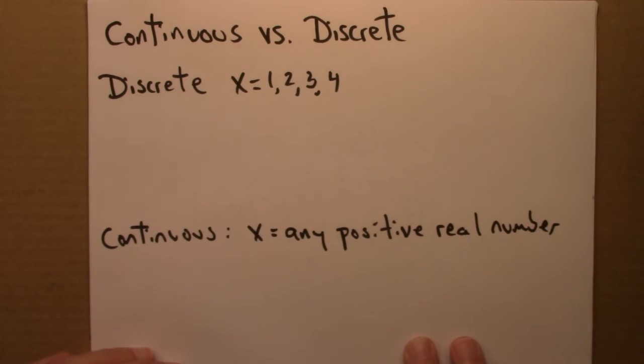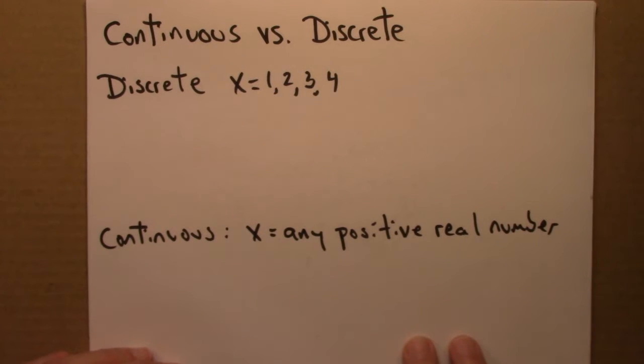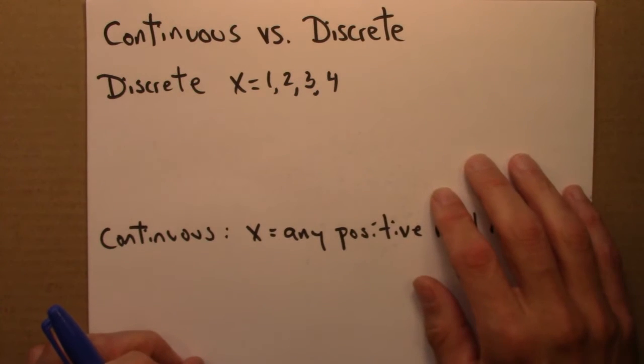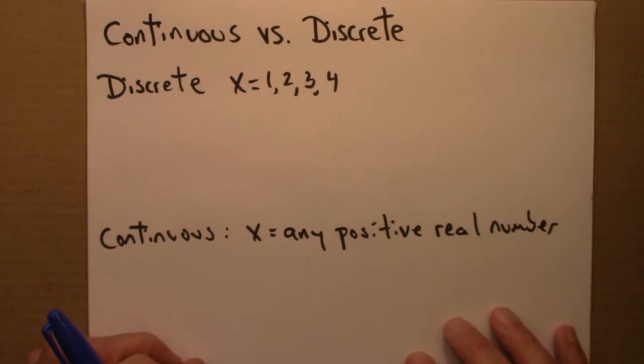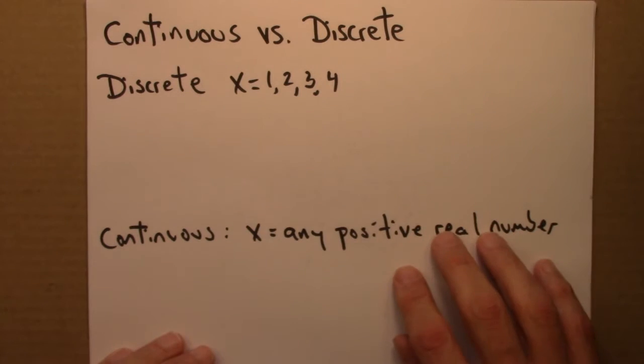In this video, I want to say a little bit about the difference between discrete and continuous random variables. These are some mathematical details that I don't want to get into too much, but I also can't avoid entirely, so I'm going to see if I can just say a little bit about them here.